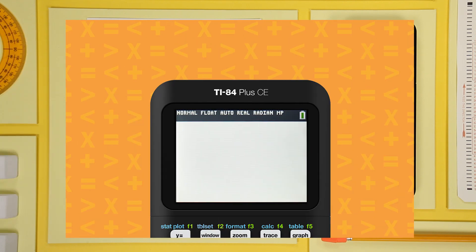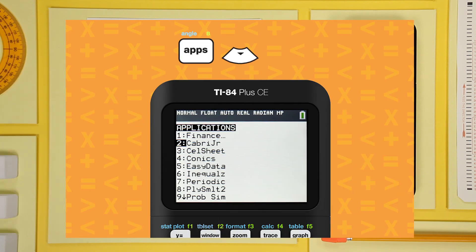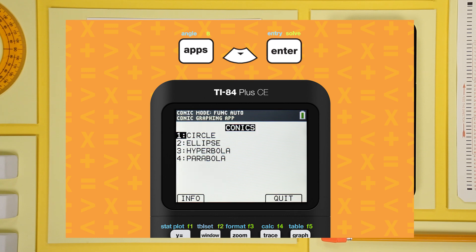First, launch the app. Press the apps button. Use the arrow to select conics from the menu. That opens this menu.